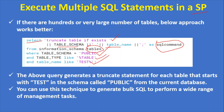The above query generates a TRUNCATE statement for each table starting with 'test' in the schema called public from the current database. If you want to target a specific database instead of the current one, use the fully qualified name. You can use this technique to generate bulk SQL for a wide range of management tasks — take the output and run it.